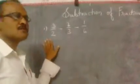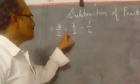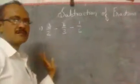Our first question is 3/2 - 2/3 - 1/6. The denominators are not equal, so we will find the LCM first.